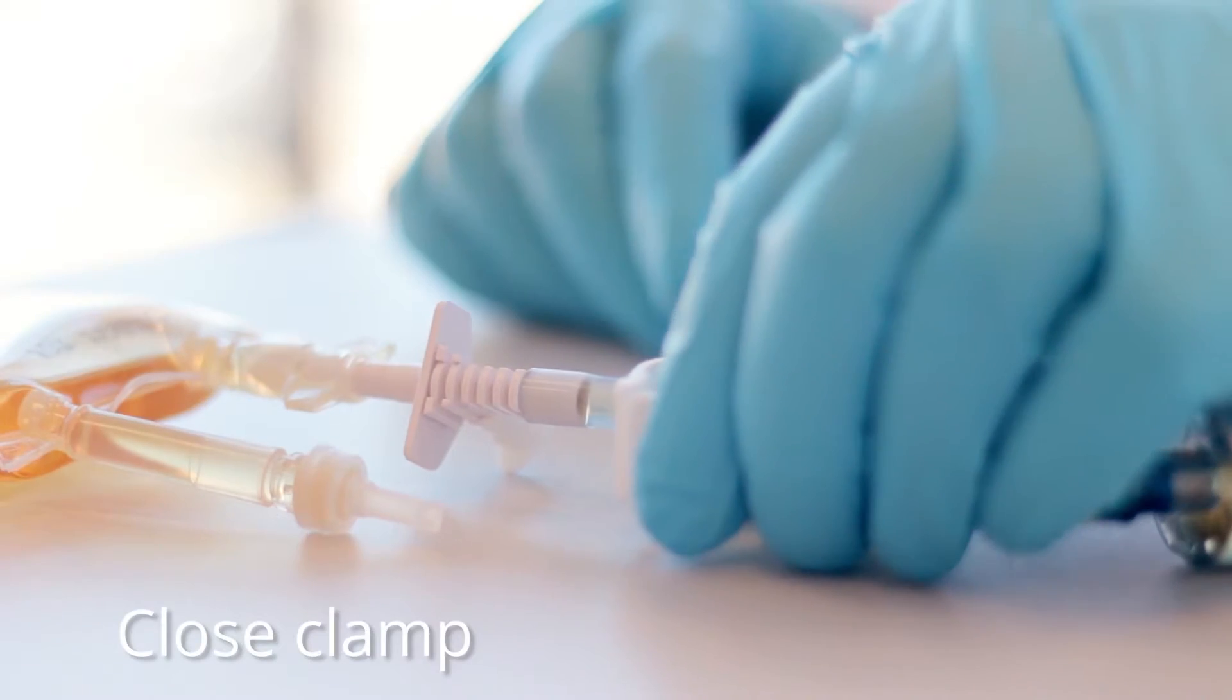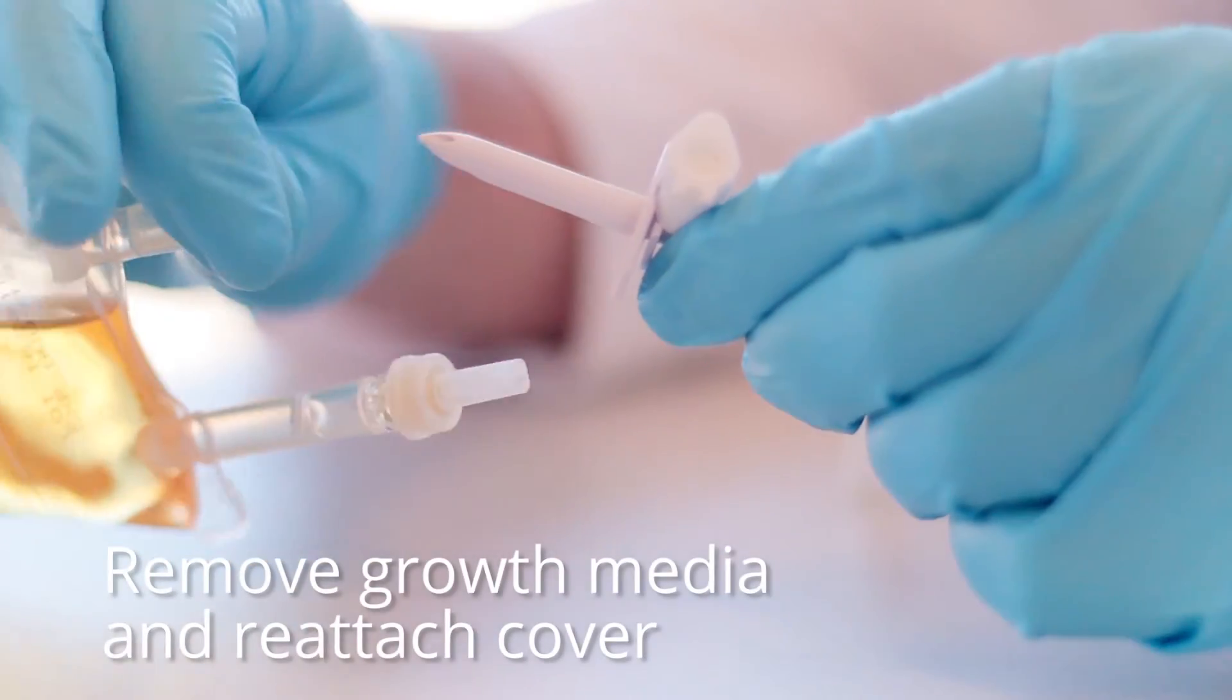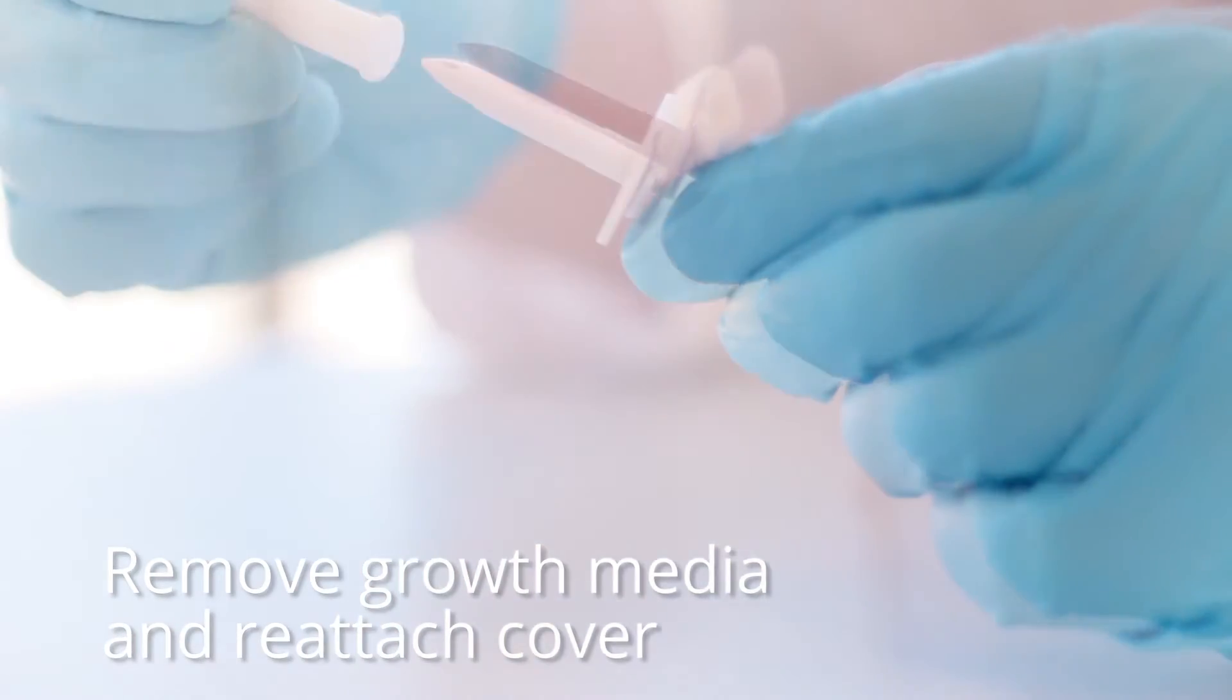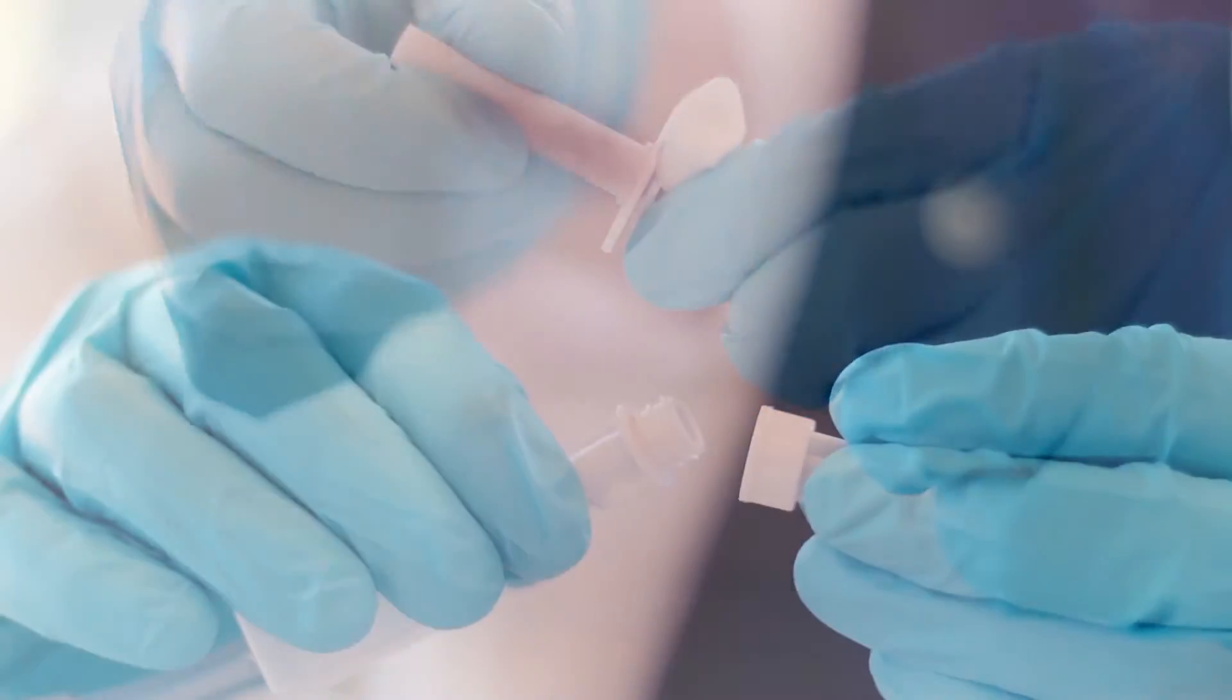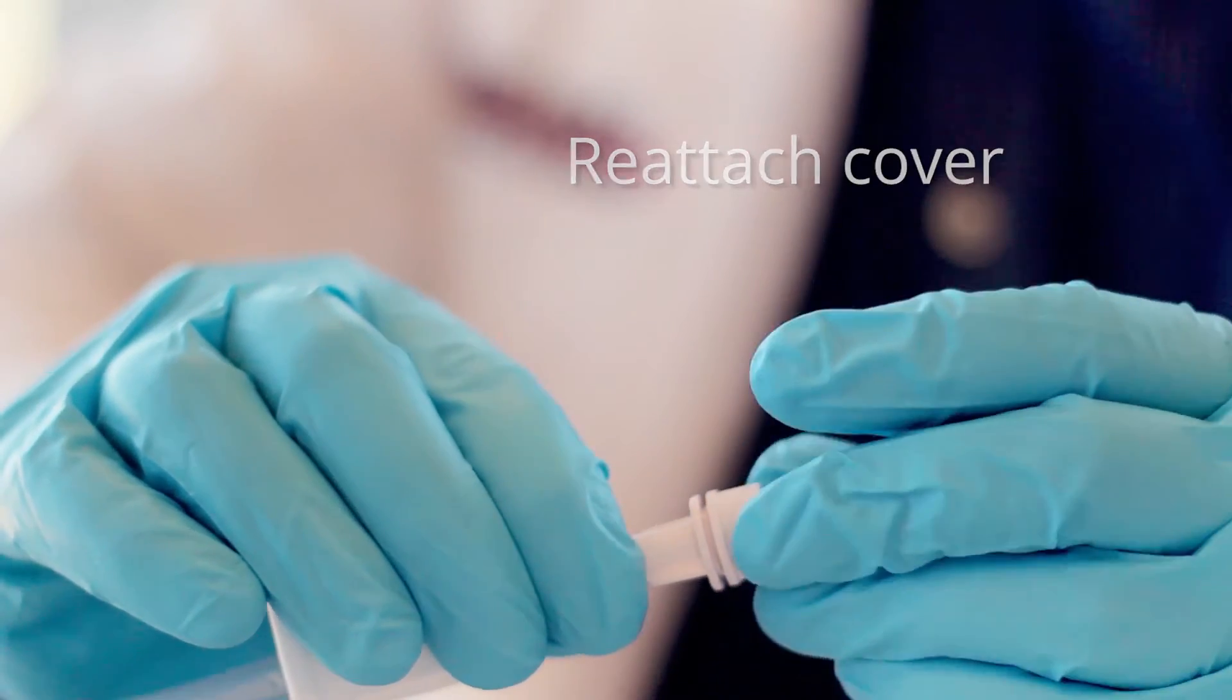Close the clamp on the tubing below the vented spike. Remove and discard the bag of growth media and reattach the spike cover. Reattach the cover on the large bore connector on the distal end of the quick test.